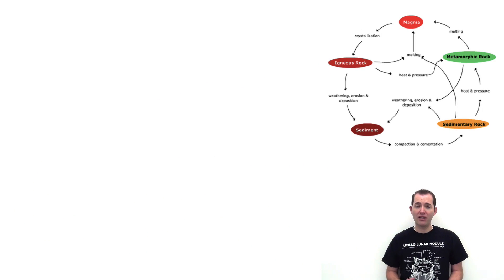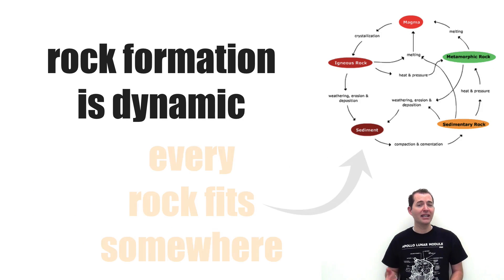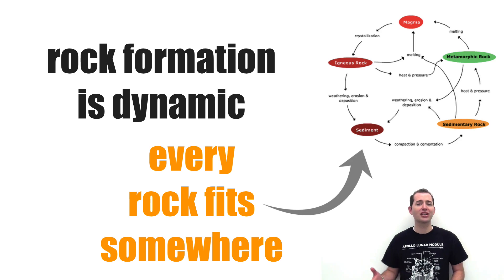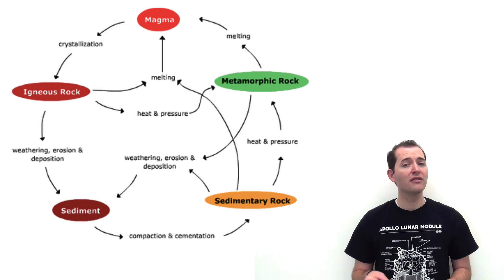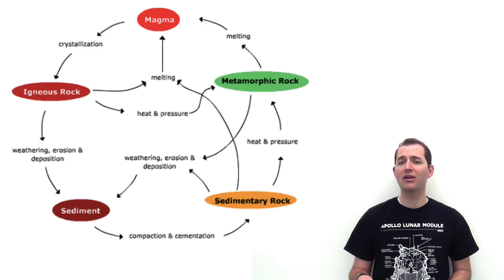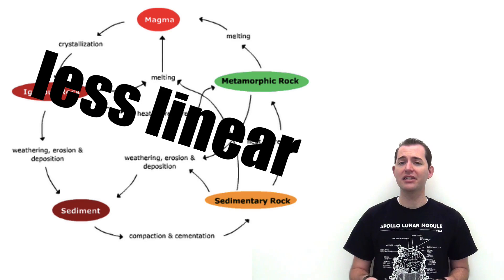The process of rock formation is dynamic, and every rock is at some point in this ever-changing pattern. The model of the Rock Cycle pushes us to think about rock change as a less linear process.